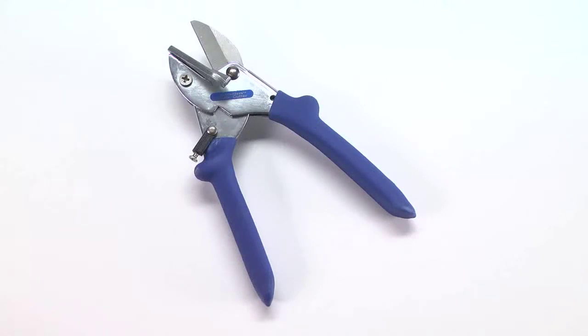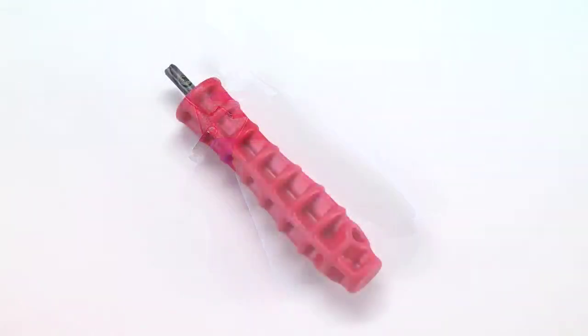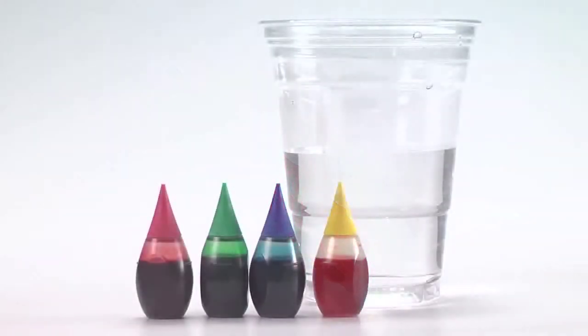The only additional tools required are the Teacher Geek multi-cutter and reamer, available separately. You will also need colored water, which can be made from water and food coloring.